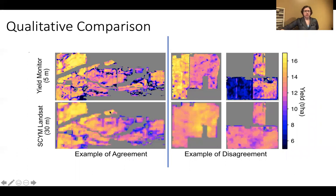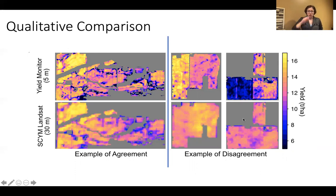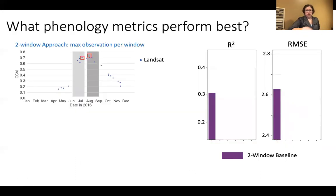The data on the top is the yield monitor data set processed to a standard five-meter yield map grid, and on the bottom are the corresponding Landsat-based SCIM yield estimations at 30 meters. The example on the left shows a case where qualitatively they match quite well. The examples on the right show disagreement — in one case the satellite yield map shows the opposite pattern of the yield monitor, and in another the fields match relatively well but the yield monitor shows very low yields for some reason.